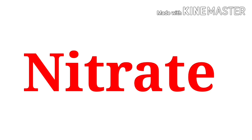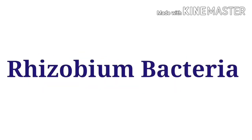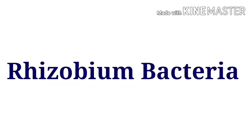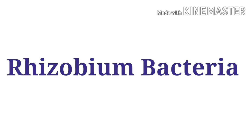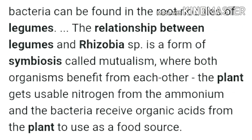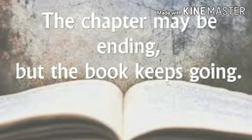This bacterium is called Rhizobium. There is a symbiotic relationship between Rhizobium bacteria and leguminous plants. Rhizobium bacteria help in nitrogen fixation, and in return the plants provide them shelter and food, because Rhizobium cannot make its own food. And with this last topic, our chapter comes to an end.